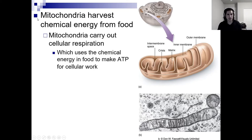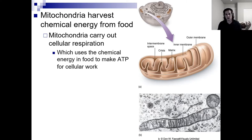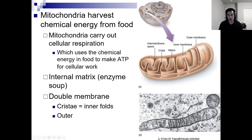Mitochondria — the powerhouse of the cell. They harvest chemical energy from food through cellular respiration, breaking down things like sugar — potential energy — into ATP. They're generating ATP, which is pretty short-lived as soon as it's made. Looking at the anatomy of mitochondria, they've got an outer membrane and an inner membrane, and a zigzag complex on the inside called the matrix. The folds themselves are called cristae — a single fold is a crista — and the reason for these cristae is to increase the surface area.